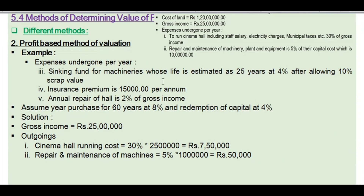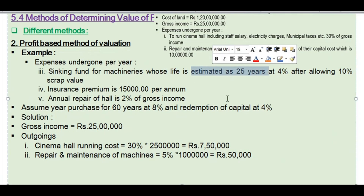The sinking fund for machinery is calculated with a life of 25 years at 4% interest after allowing 10% scrap value. The machinery capital cost is 10 lakhs. After 10% scrap value is deducted, that is 1 lakh, the net amount for sinking fund accumulation becomes 9 lakhs.